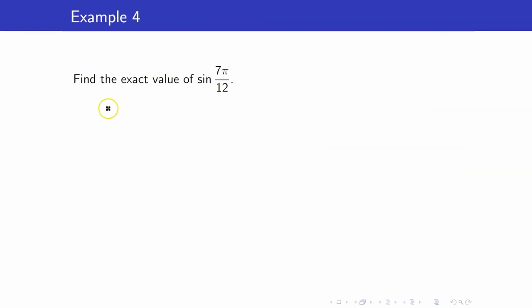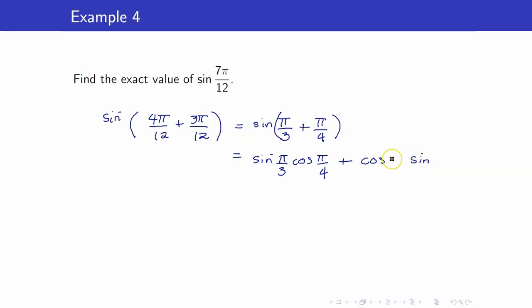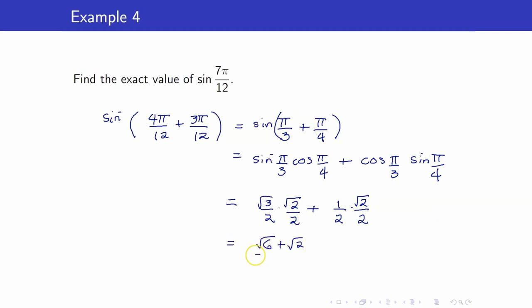Let us find the exact value of sine(7π/12). We write 7π/12 as 4π/12 plus 3π/12, which is π/3 plus π/4. Using our formula: sine(π/3)·cosine(π/4) plus cosine(π/3)·sine(π/4). Sine π/3 is √3/2, cosine π/4 is √2/2, cosine π/3 is 1/2, and sine π/4 is √2/2. Therefore, we get (√6 + √2)/4.